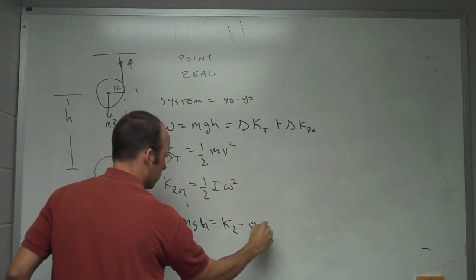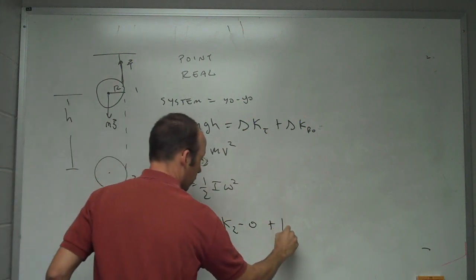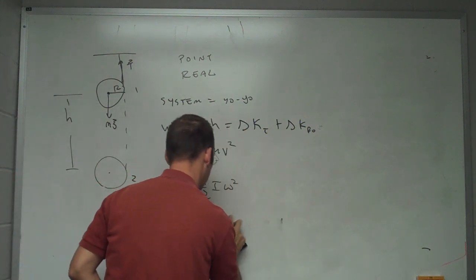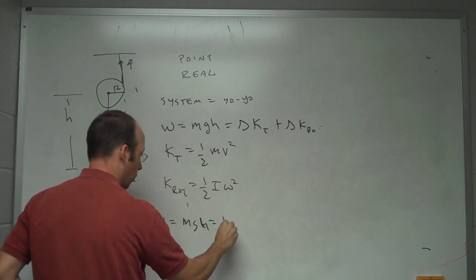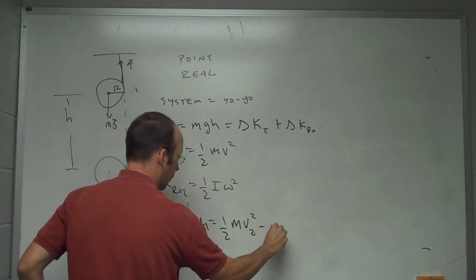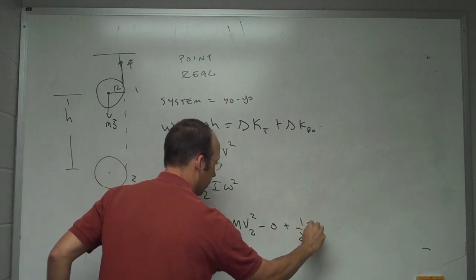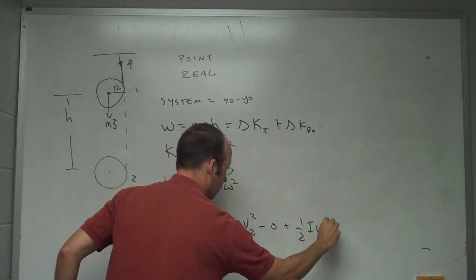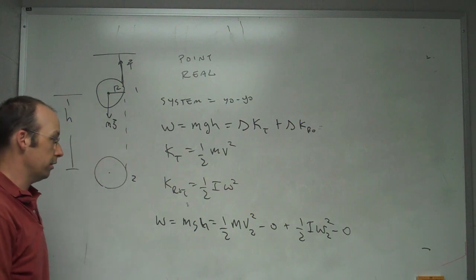Let me just go ahead and put in the values for these. One-half m v2 squared minus zero, plus one-half I omega 2 squared minus zero. That's my change.